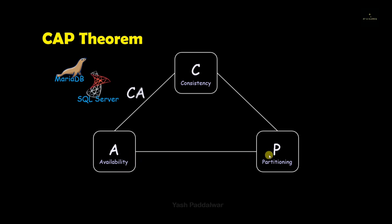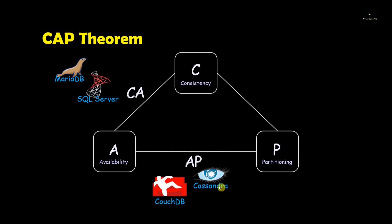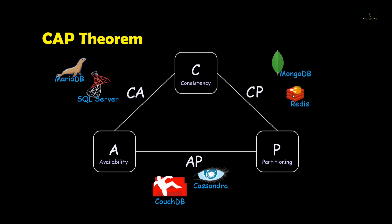Now let's focus on the edge containing availability and partitioning. These data models support both availability and partitioning but do not contain the property of consistency — examples are CouchDB and Cassandra, among many others. These are network shared distributed systems. Now the edge containing consistency and partitioning represents data models which support consistency and partitioning but do not support availability — examples are MongoDB and Redis, among many others. These are also network shared systems.